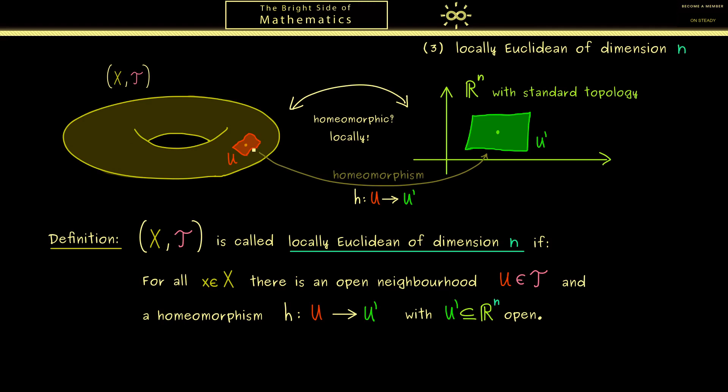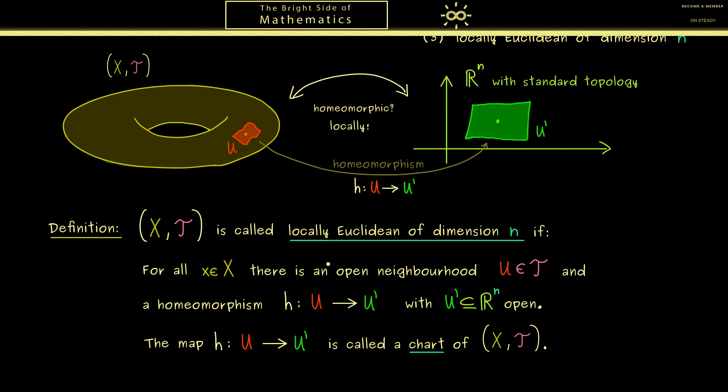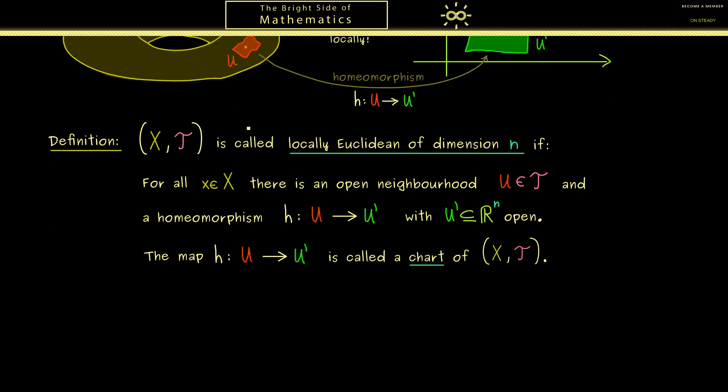So more concretely, we can translate all the points here to R^n, calculate here, and then translate back. How we exactly do this we will discuss soon. However, maybe I can already give you an idea how we can add structure to this topological space.